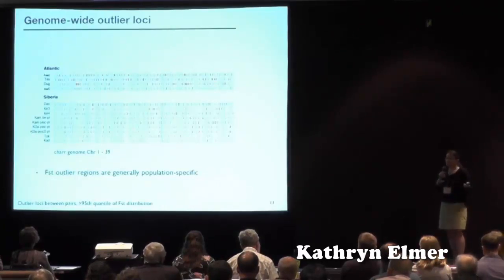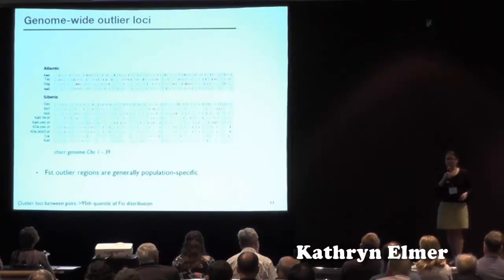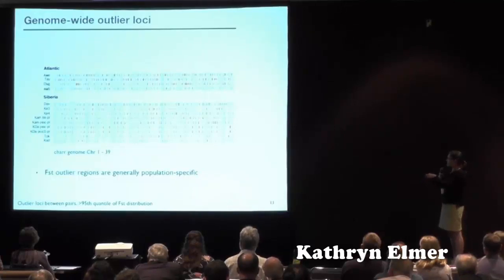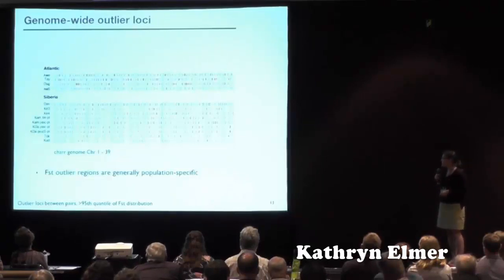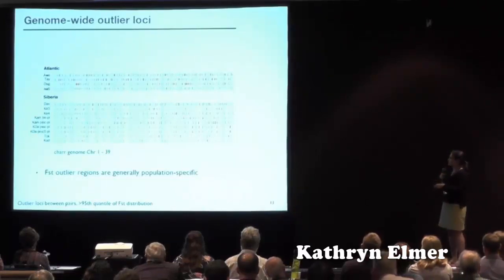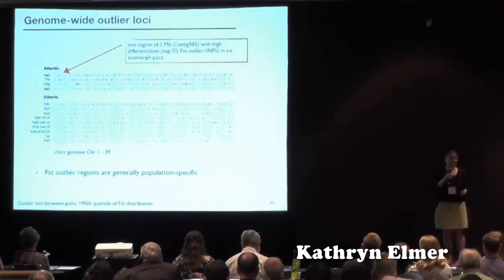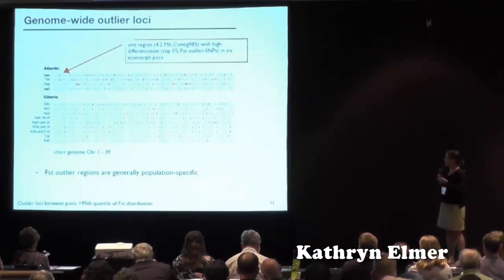We then looked at genome-wide representation of outlier loci — loci that show the most extreme signals of divergence compared to background between different ecotypes. Each bar is one lake with a comparison of two ecotypes. Most of these regions are population-specific; the outlier loci are distributed across the genomes individually. There was only one region where we had a high level of differentiation shared between six different ecomorph pairs, so for the most part extremely population-specific levels of outlier loci.